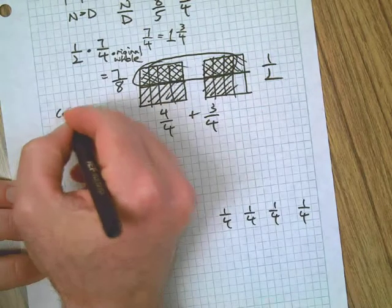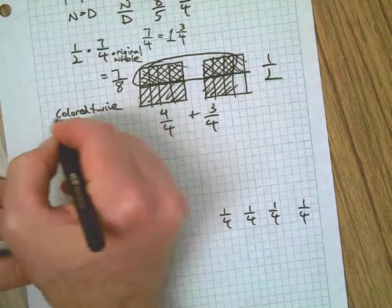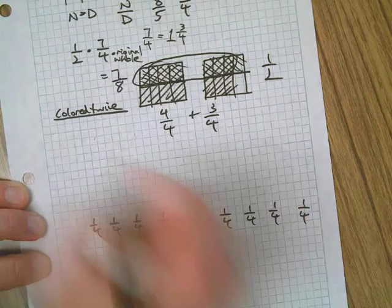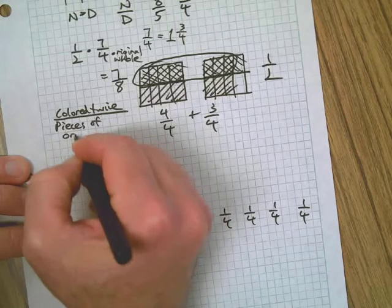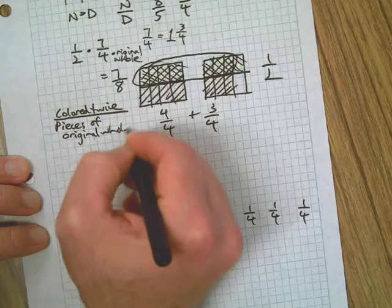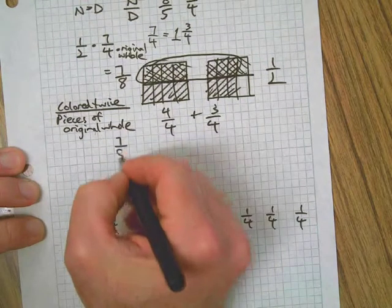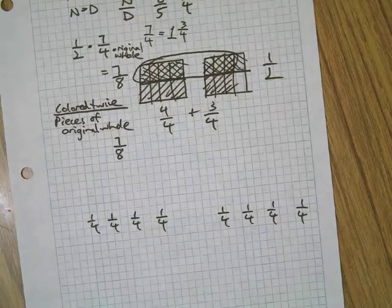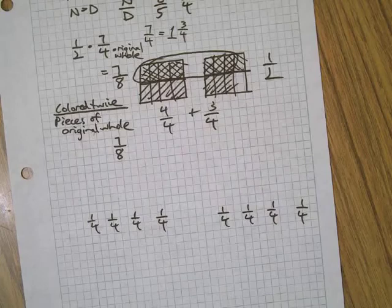The part that got colored twice is the numerator. Count them. The denominator is the pieces of the original, of the whole thing. Okay, which is 7/8. There we go. Okay, video number one done. Video number two, stay tuned.